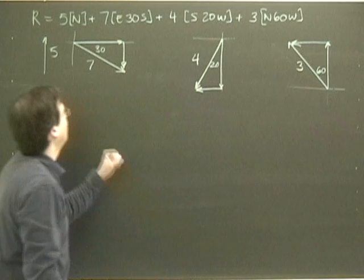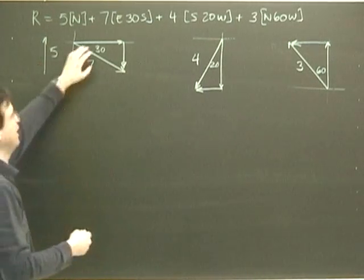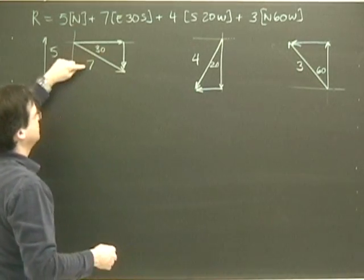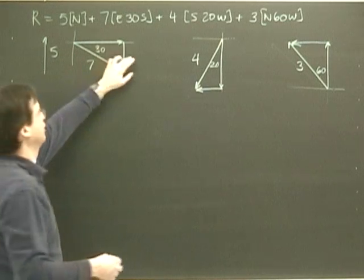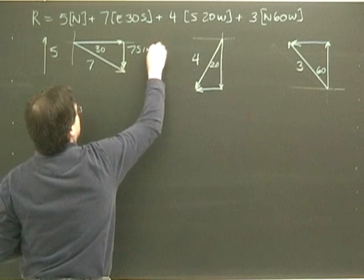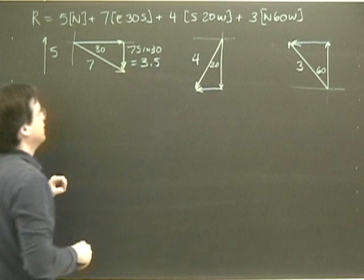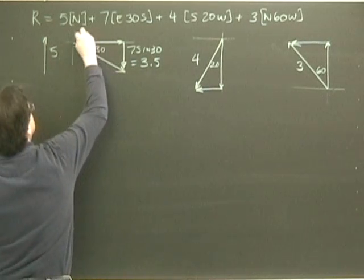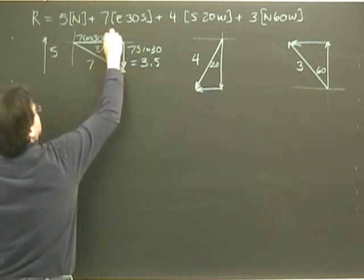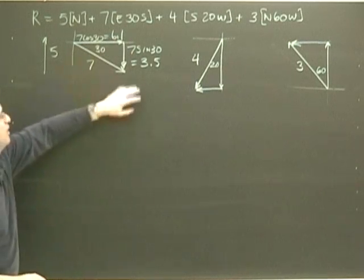So I look at all my components. All my components are along the x axis or along the y axis. Now I need to find out their magnitude, how big they are, and then I can add them up. So this is 30 degrees. This is 7. We have a right angle triangle. This side is going to be 7 sine 30, which is going to give us 3.5. This side here is 7 cosine 30. 7 cosine 30 is equal to 6.1. So 6.1 to the right, 3.5 down.